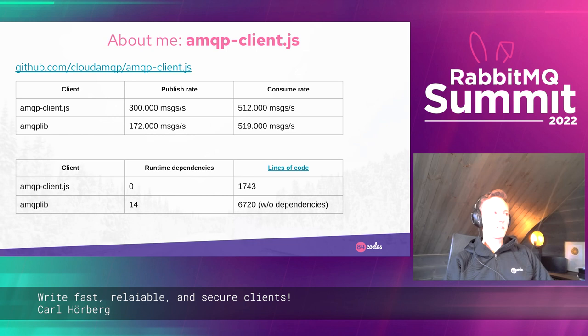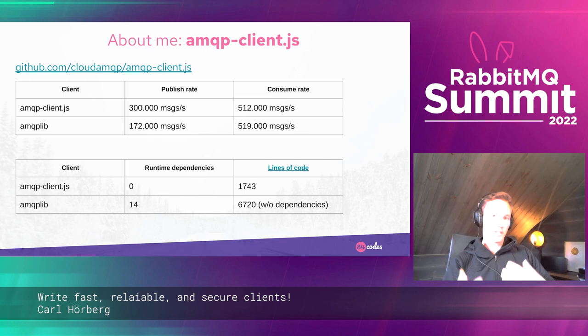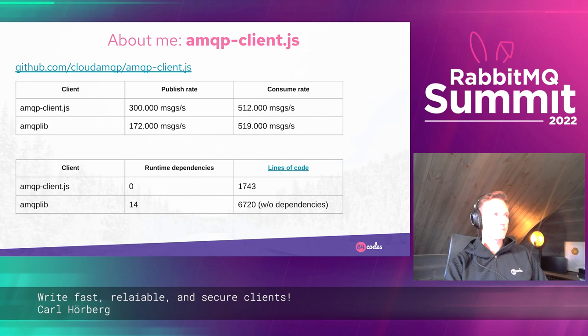We also have JavaScript applications where we traditionally used amqplib, but that is a huge codebase, very old, with many different maintainers over the years and tons of runtime dependencies. One thing it was lacking was WebSocket support, which I also implemented. The new client is written in TypeScript — it transpiles to JavaScript but has all the TypeScript definitions and nice syntax help. It's also quite a lot faster for publishing with about the same consumer rates.